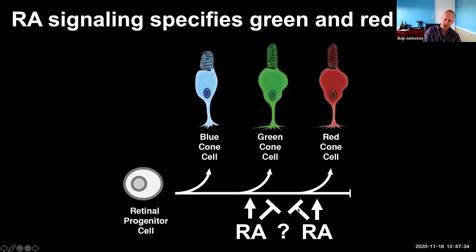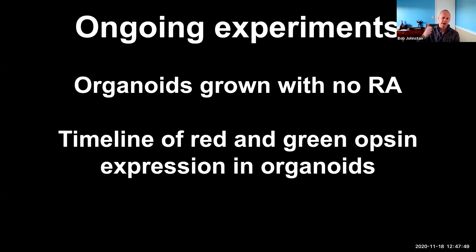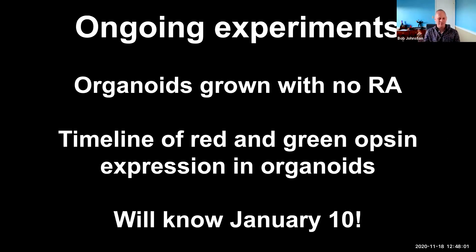The last big puzzle question Sarah is addressing right now is: is retinoic acid promoting green fate early and repressing red fate, or is it promoting red fate late and repressing green fate? To address this, she's growing organoids with no RA to see the baseline of what happens when there is no RA in the media. Additionally, she's doing a timeline looking at red and green opsin expression in organoids over time to see if this recapitulates what we see with the real fetal human expression data. These experiments take a long time; it takes real kick-ass scientists to do this. We'll know the answer on January 10th.